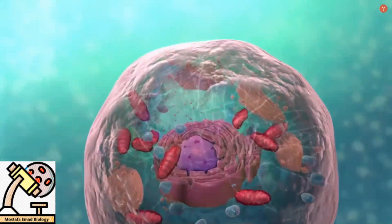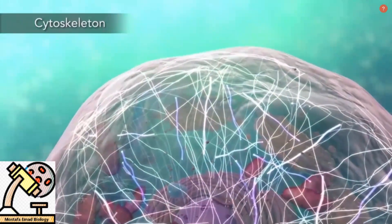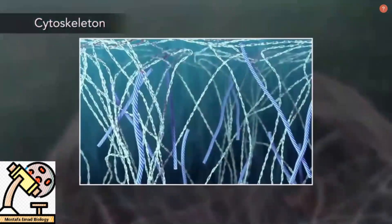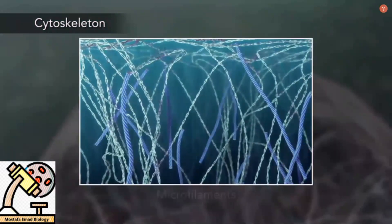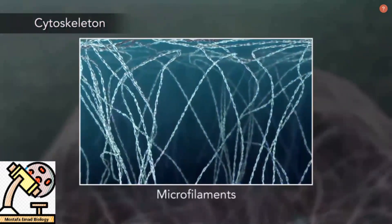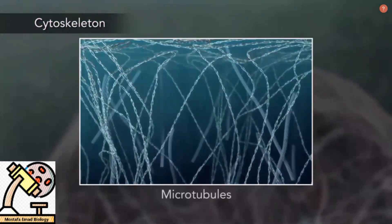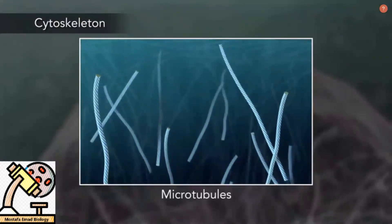Meanwhile, the cell maintains its shape through a cytoskeleton. The cytoskeleton includes the thread-like microfilaments, which are made of protein, and microtubules, which are thin hollow tubes.